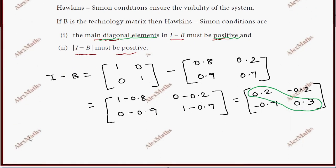So determinant value, determinant of I minus B: it is 0.2, minus 0.2, minus 0.9, 0.3. Calculation: leading diagonal multiply, so 0.2 into 0.3,